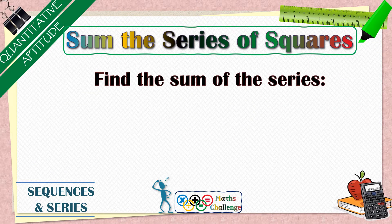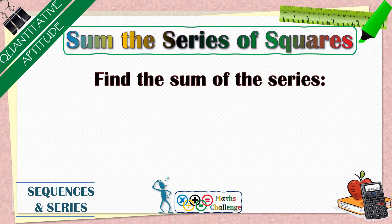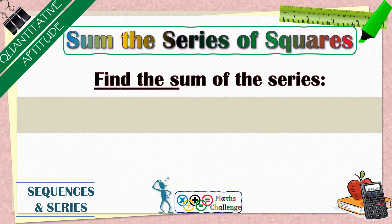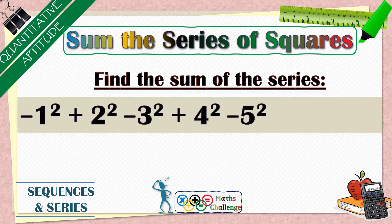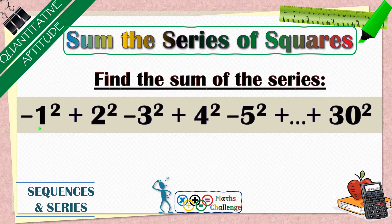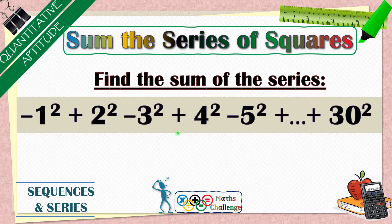Hi friends, welcome to IPMLEEP. Today's video lesson is about the question on your screen. You have to sum up the series of squares: minus 1 square plus 2 square minus 3 square plus 4 square minus 5 square plus so on up to 30 square.